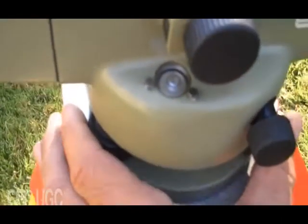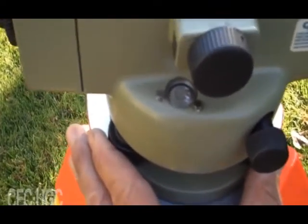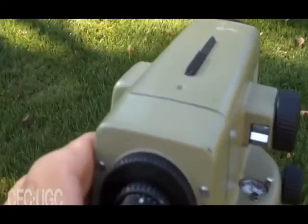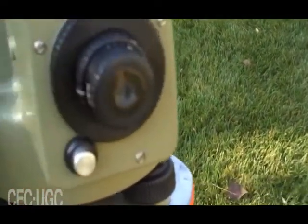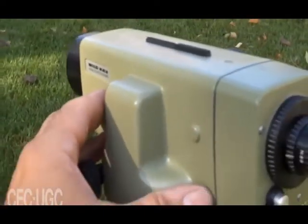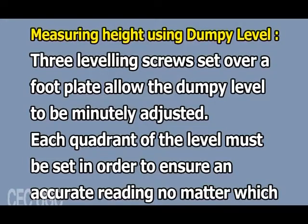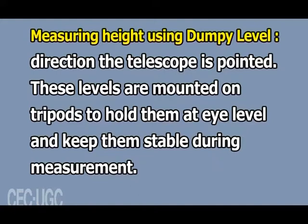The surveyor may also use an arbitrary point and estimate its height. The main body of a dumpy level is a telescope that swivels to take 360 degrees of measurement; magnification power can range from 20 to 30 times. Many have spirit levels — the same kind found in simple construction — built into the base so the operator can clearly see if the device is level. When the bubble stays in the exact center no matter how the telescope is rotated, the device is level. Three leveling screws set over a foot plate allow the dumpy level to be minutely adjusted. Each quadrant must be set to ensure an accurate reading in any direction; these levels are mounted on tripods to hold them at eye level and keep them stable.